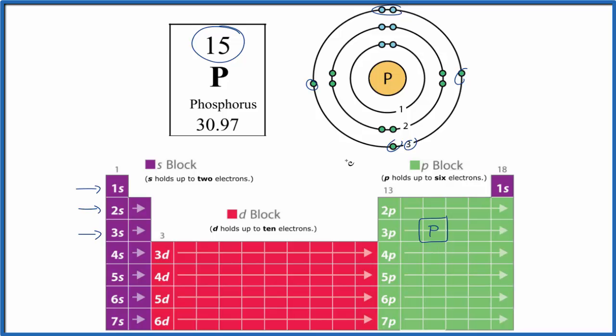If you need help writing the electron configuration for phosphorus, or finding the number of neutrons, there's a link at the end of this video. This is Dr. B with the Bohr diagram, or Bohr model, for the phosphorus atom.